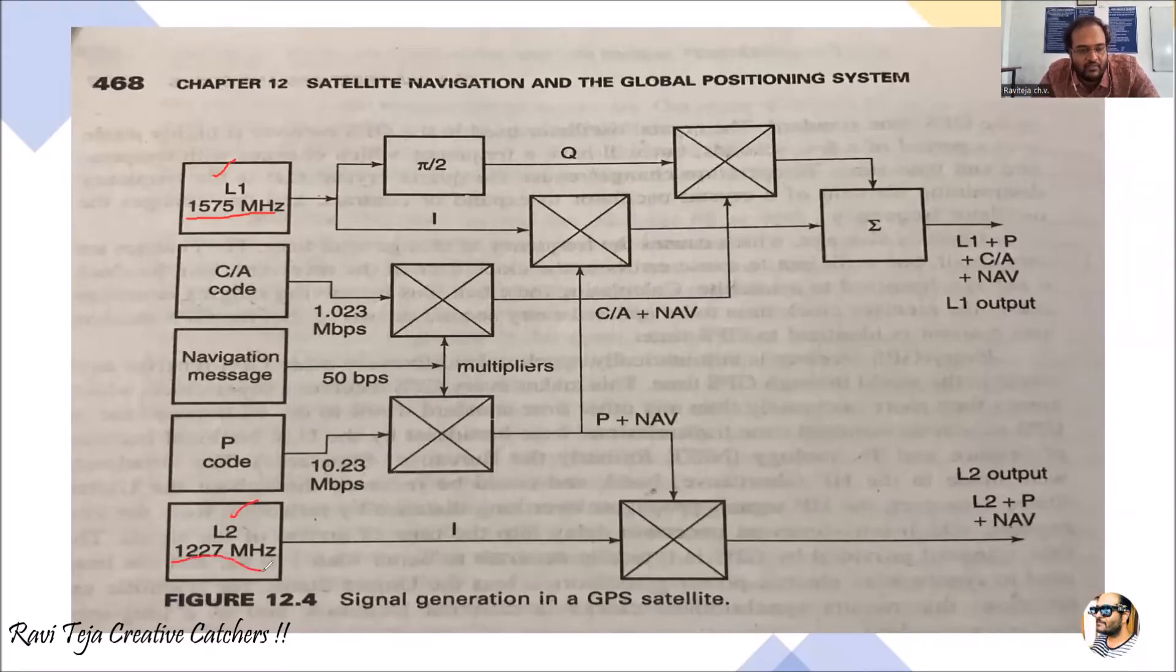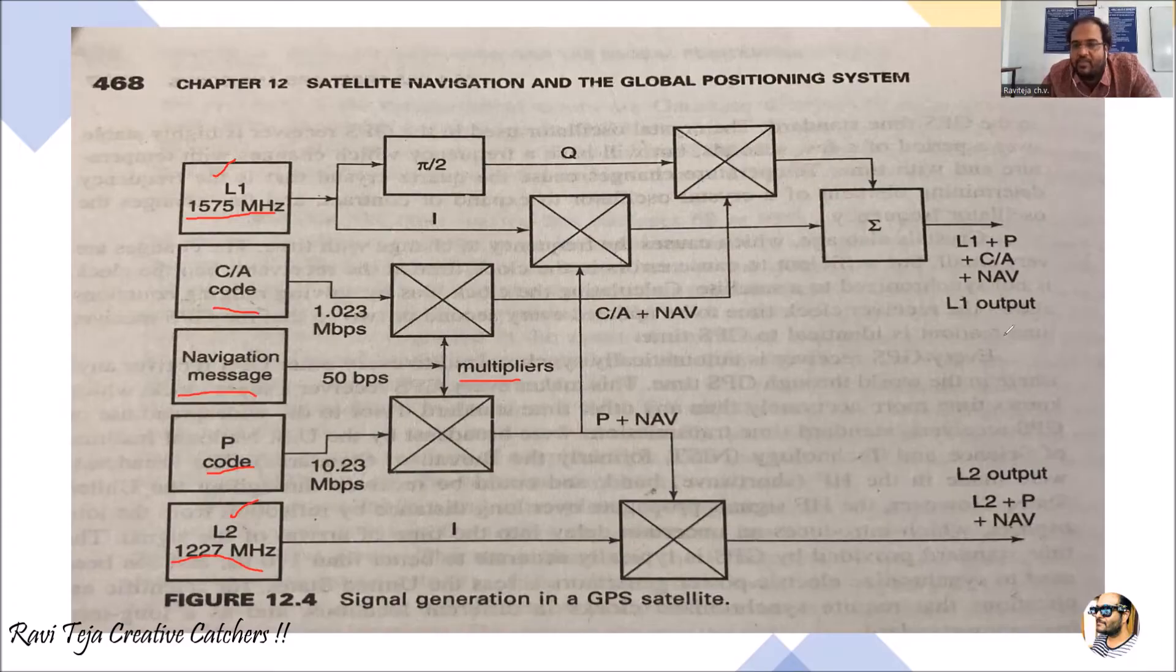Here we have two codes, one is C/A code and the P code, pseudorandom code. These will be combined with a navigation message using some multipliers. Here it will be some summation and some will be multiplied. All the bits will be coming with respect to L1 as an L1 output and L2 output.